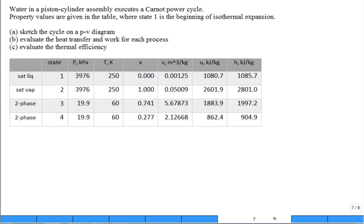Water in a piston-cylinder assembly executes a Carnot power cycle. Property values are given in the table where state one, this is state one right here, is the beginning of the isothermal expansion.